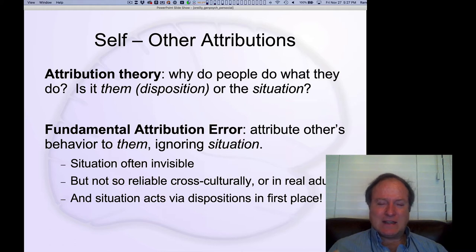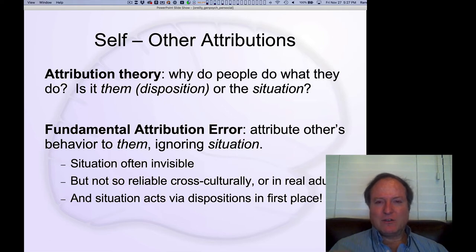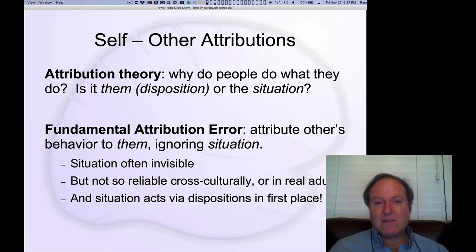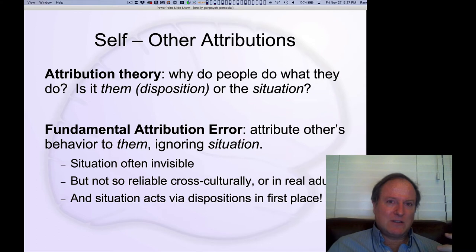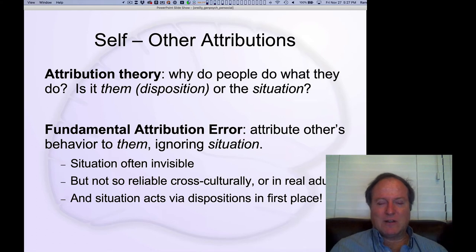The basic idea of an attribution is simply, from a causal perspective, what do you attribute people's behavior to? How do you explain other people's behavior? There are two kinds of factors: dispositional factors — something about the person themselves — versus situational factors. This distinction between internal factors of a person versus the situation, the social context, and environmental factors is a fundamental tension seen throughout the field.